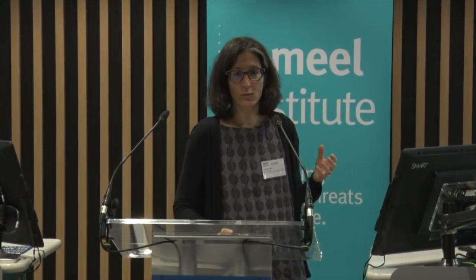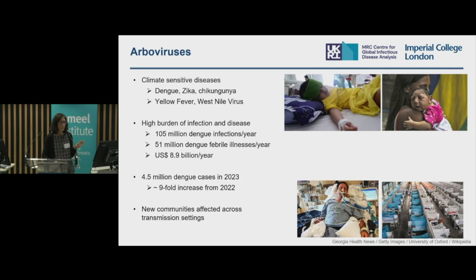What are arboviruses? Arboviruses cause climate-sensitive diseases — we are talking about viruses such as dengue, zika, and chikungunya. These are viruses that spread and circulate endemically within the human population, but you are also talking about zoonoses: viruses such as yellow fever and West Nile virus that circulate within the animal reservoir and then occasionally spill over into the human population.